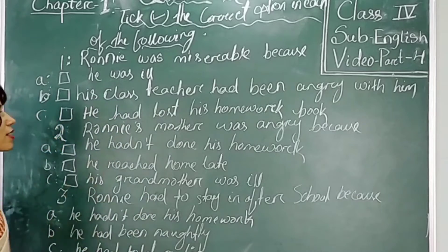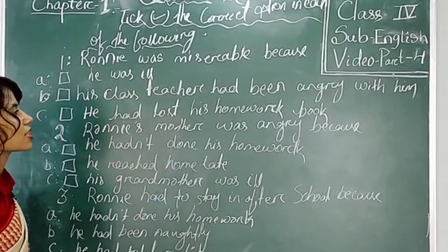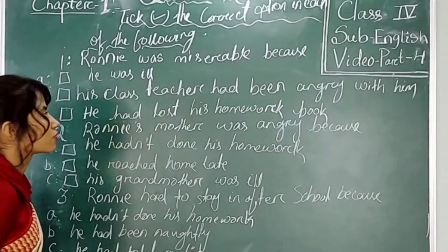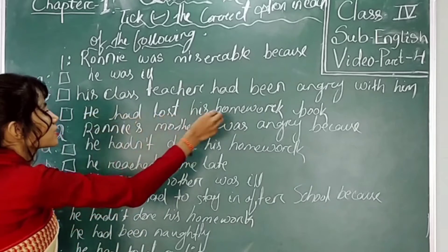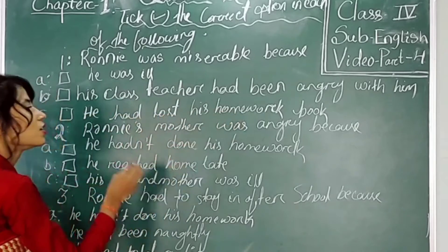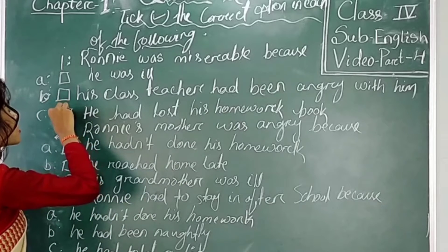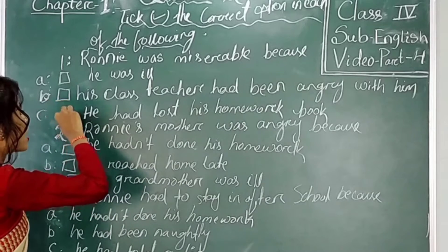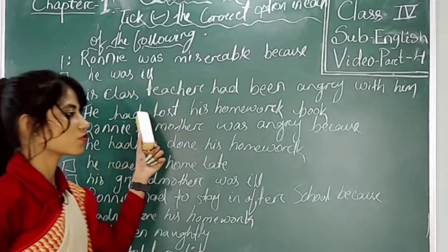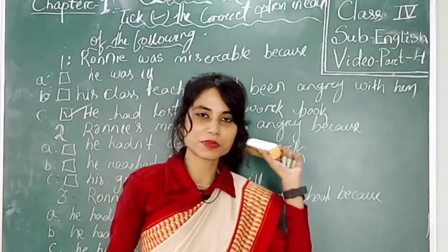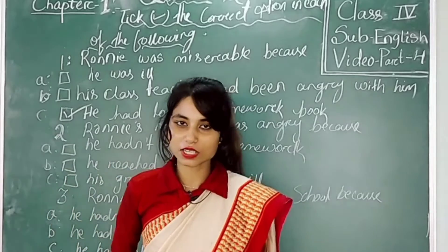So what was the correct answer? Not the first one, not the second one. His class teacher had been angry with him, but what is the reason? The reason is that he has lost his homework book. So Ronin was miserable because he has lost his homework book — that's why, because of this reason, his class teacher had been angry with him.